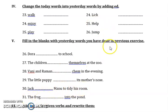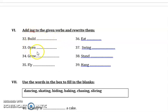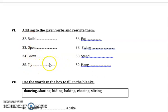Next, add -ing to the given verbs and rewrite them. Build — building. Open — opening. Grow — growing. Fly — flying. That means the action is happening now.